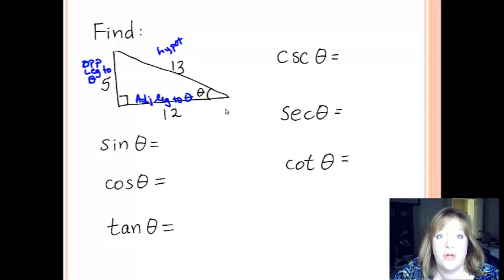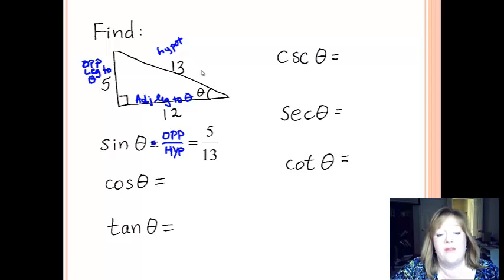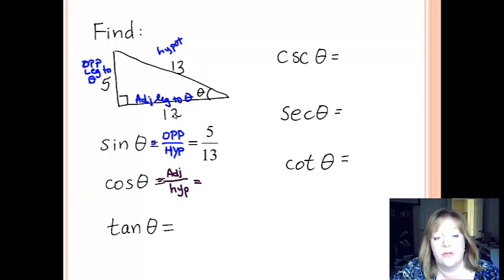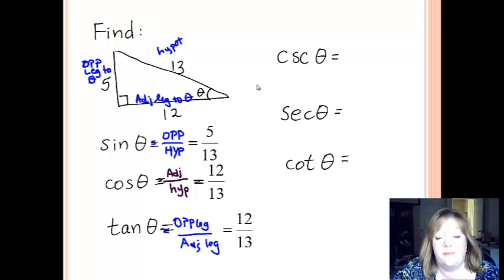Sine, cosine, tangent, SOHCAHTOA. So sine is opposite over hypotenuse. So that's going to be 5 over 13. Cosine is adjacent over hypotenuse. So that's going to be 12 over 13. And tangent is opposite over adjacent, which is going to be 5 over 12. Make sure you get that right on your notes. That should be 5 over 12.